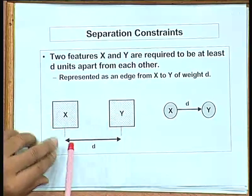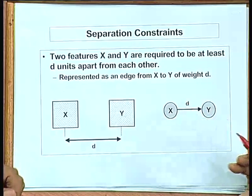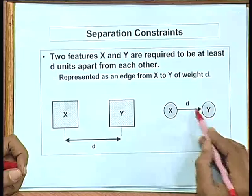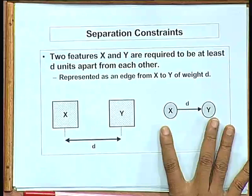The constraint graph-based method says you first construct this constraint graph, which tells you the minimum distances and constraints that exist between features. If there are certain parts with no constraints, you can compact them freely. This graph is utilized by a compactor. There are many ways to create this graph; one popular method is shadow propagation.